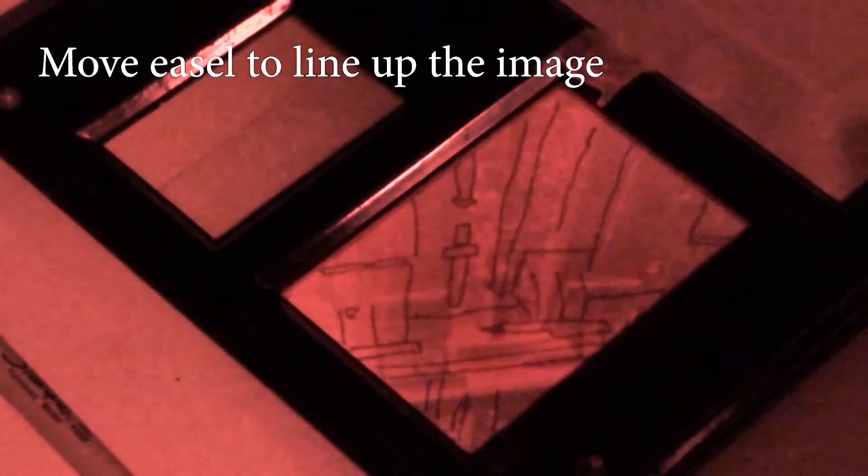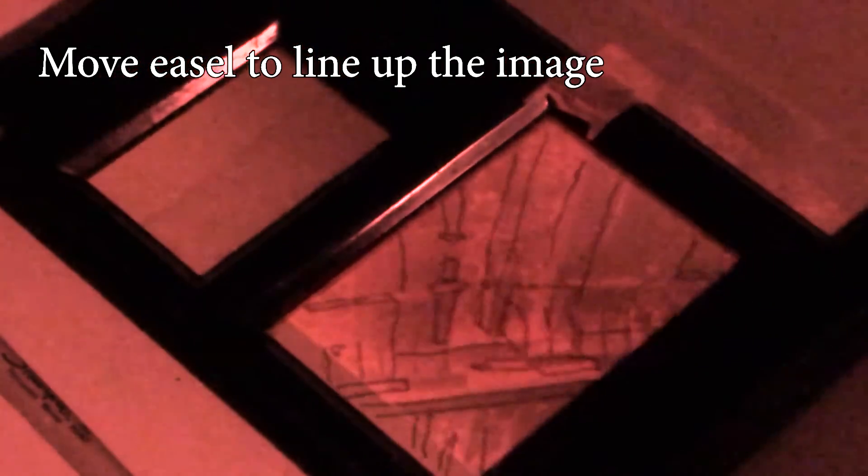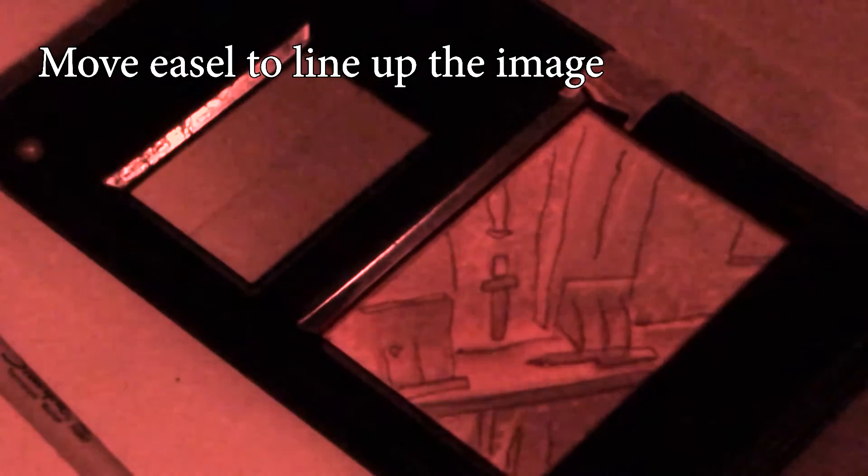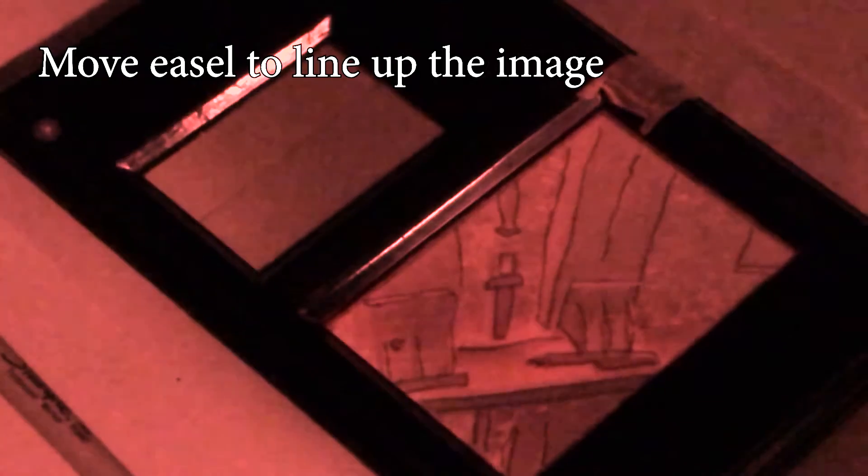Okay. Next step. We're going to move the easel around until the image lines up with the projected image from the enlarger. Once you have that all lined up, we are ready to make our two backward prints.